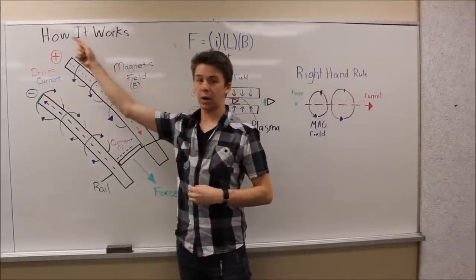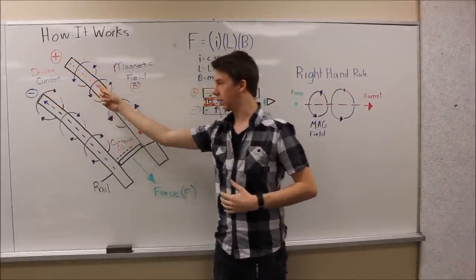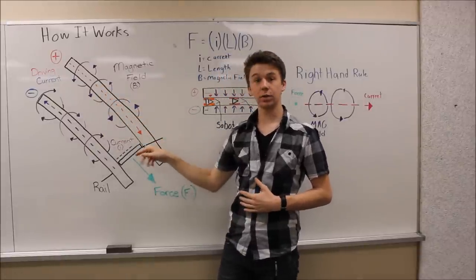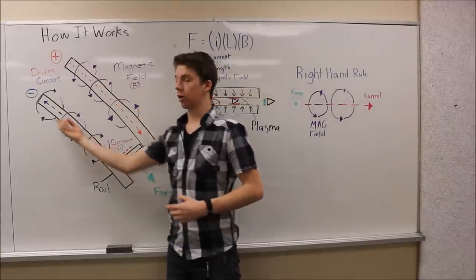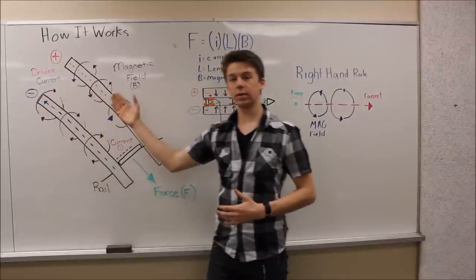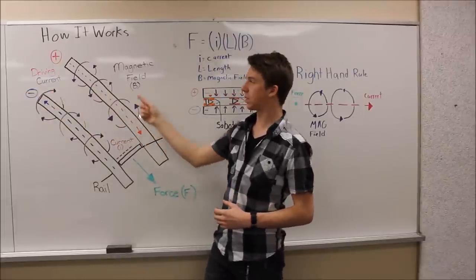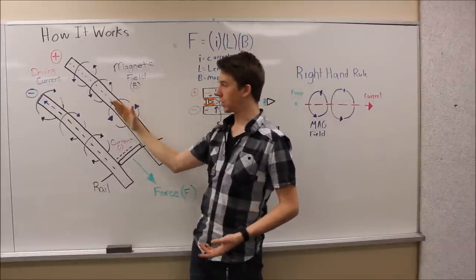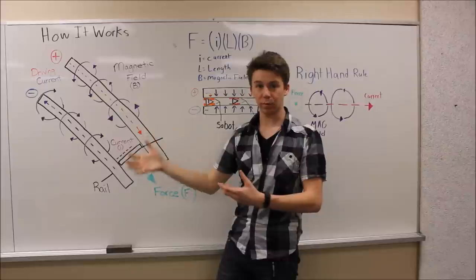Here's how an electromagnetic rail gun works. The current from your power supply comes into your positive rail, travels down to your armature, where it then crosses over to your negative rail, and current flows out. While current is inside these rails, it produces a magnetic field. These magnetic fields exert a force upon our armature or projectile.